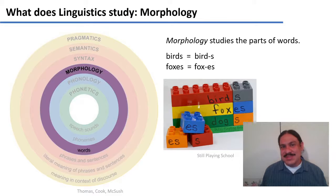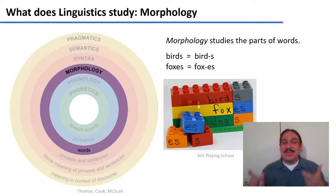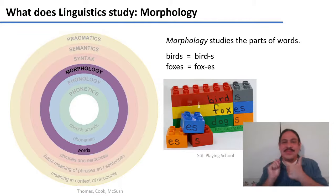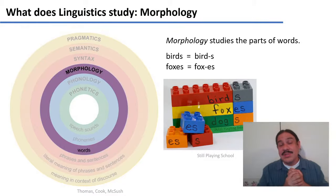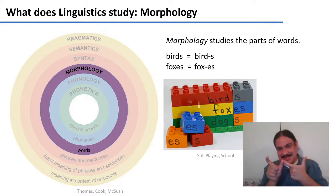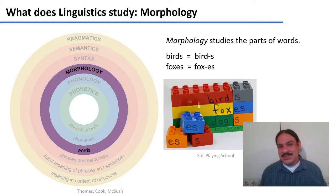Morphology, as we've mentioned before, is the study of the parts of words. So in English, 'birds' has 'bird' and the plural 's'. Notice that the plural in English is sometimes different — sometimes it's 'es', as in 'foxes'. We'll study what causes that variation.